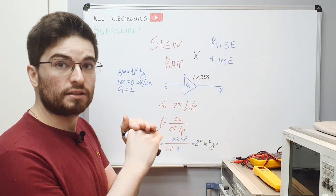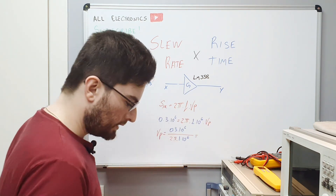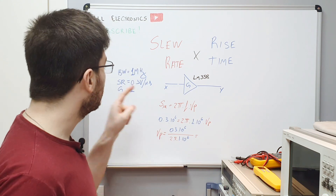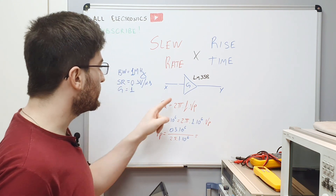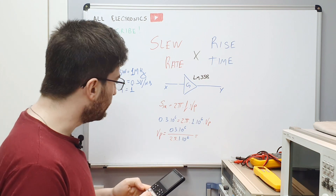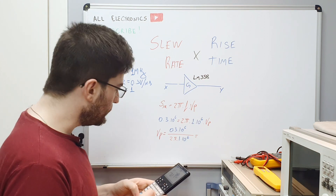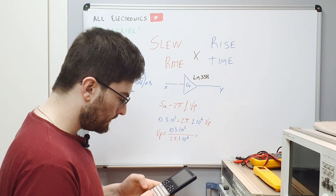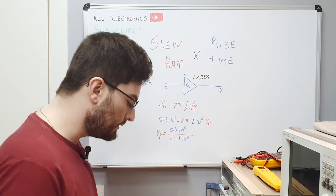So it operates as a totally linear circuit. The maximum peak voltage we can have on a buffer amplifier, because we are using the full bandwidth of the LM358, is 0.3 over 2π—it's 48 millivolts.